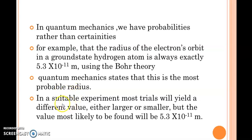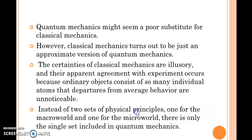In quantum mechanics, Bohr radius is the most probable radius, not a fixed exact value. If we calculate the Bohr radius experimentally, the most probable value will be 5.29 times 10 raised to minus 11 meters. If an experiment is done, it may yield a different value, either larger or smaller, but the most probable value, the value most likely to be found, is the Bohr radius.